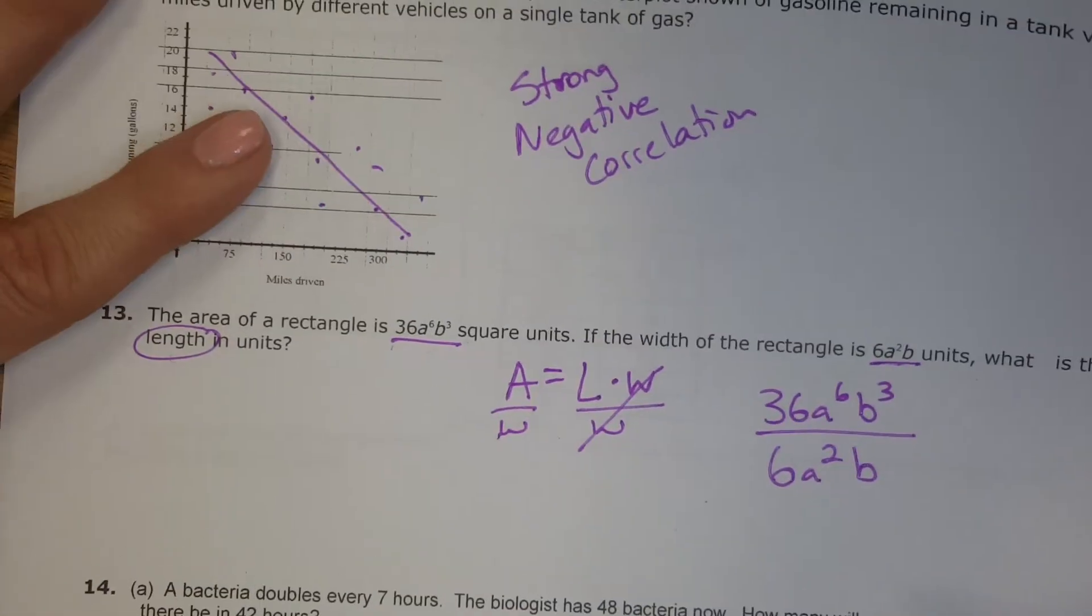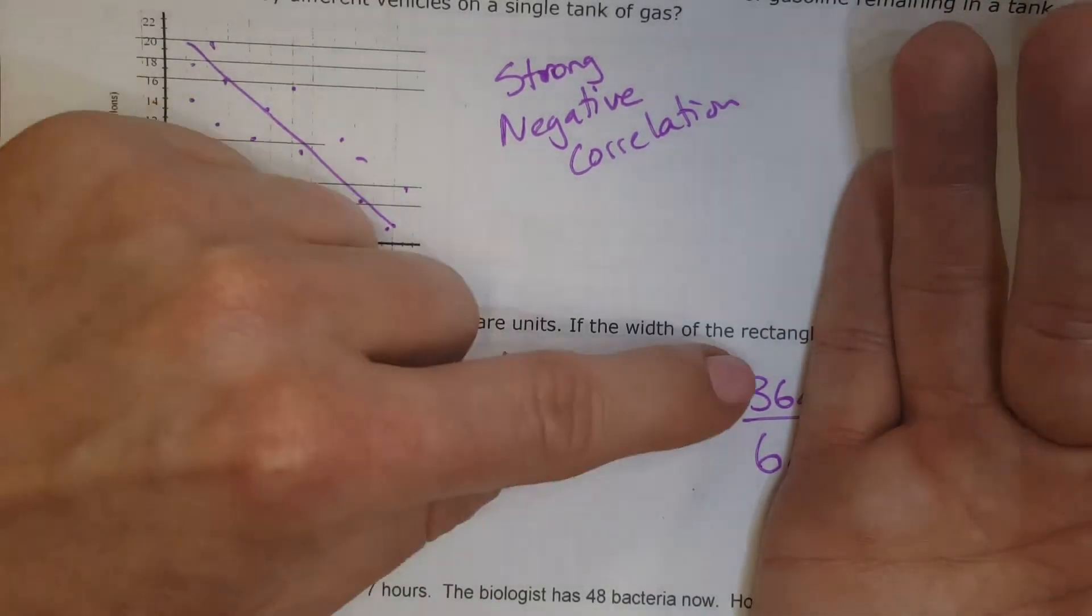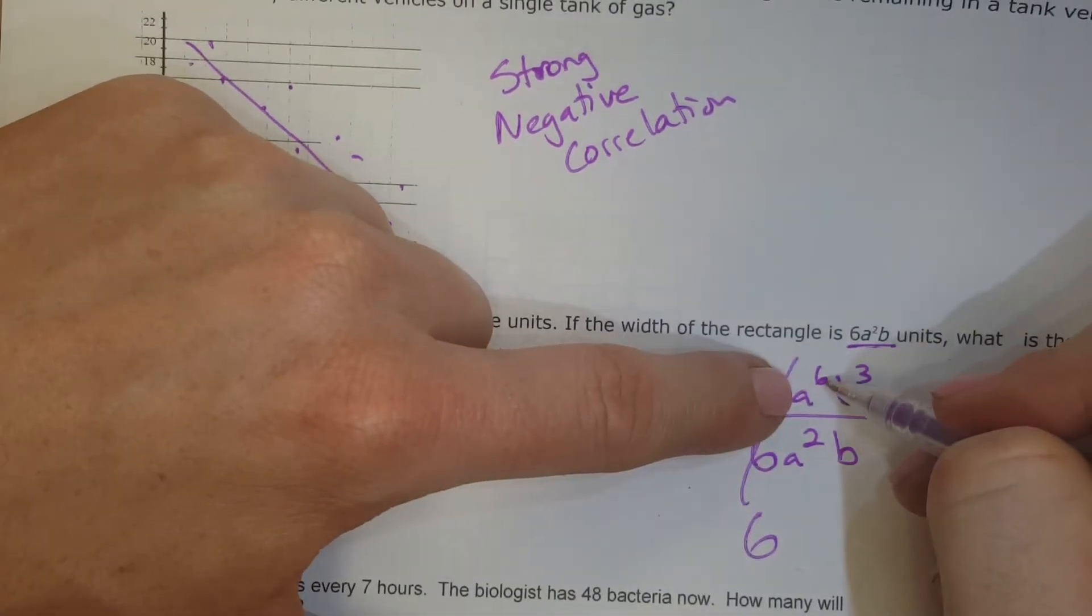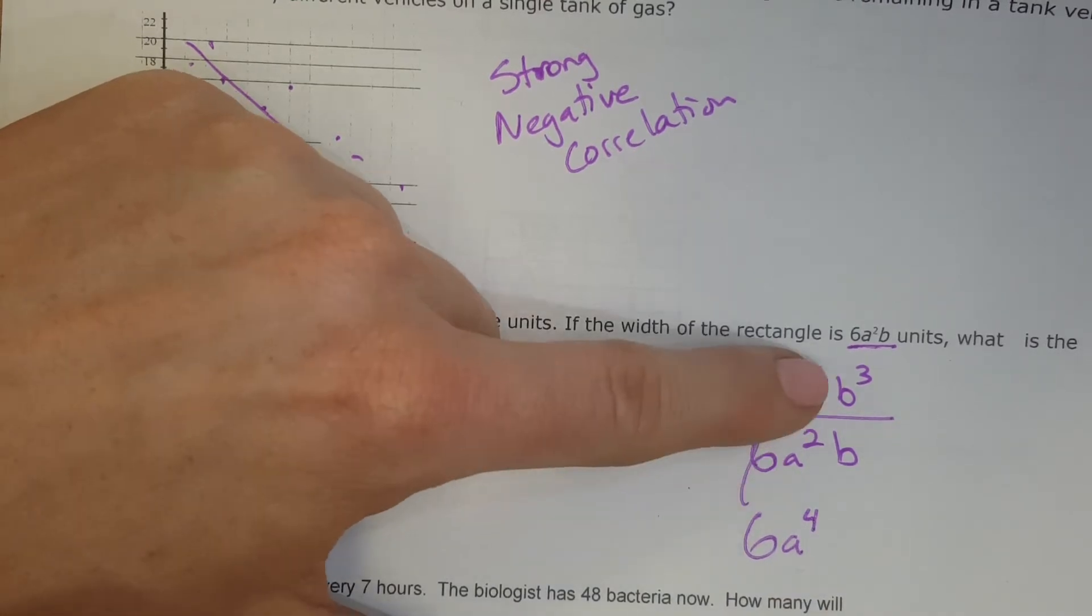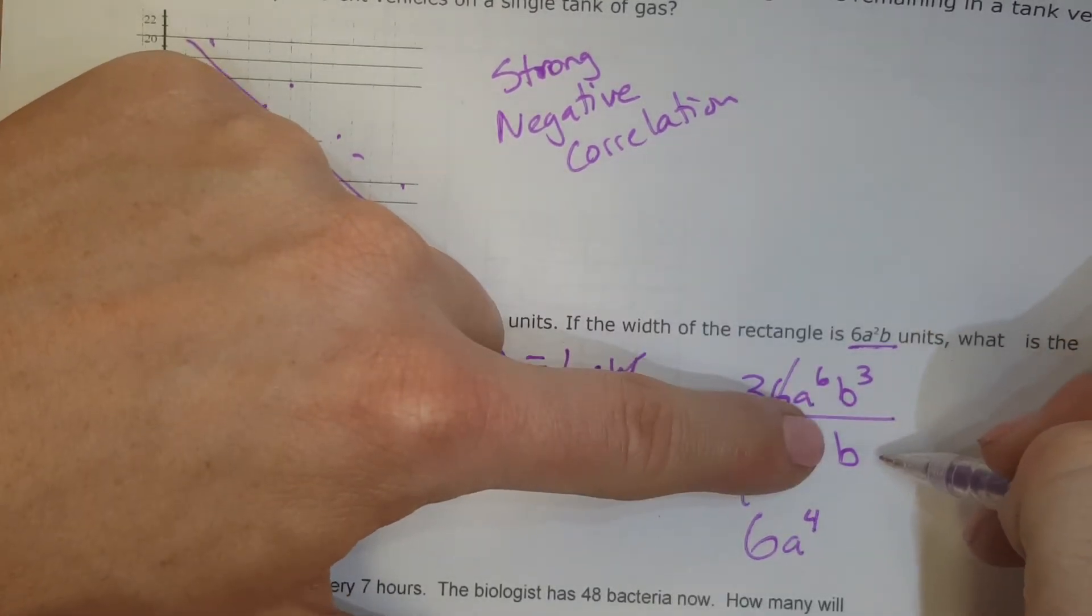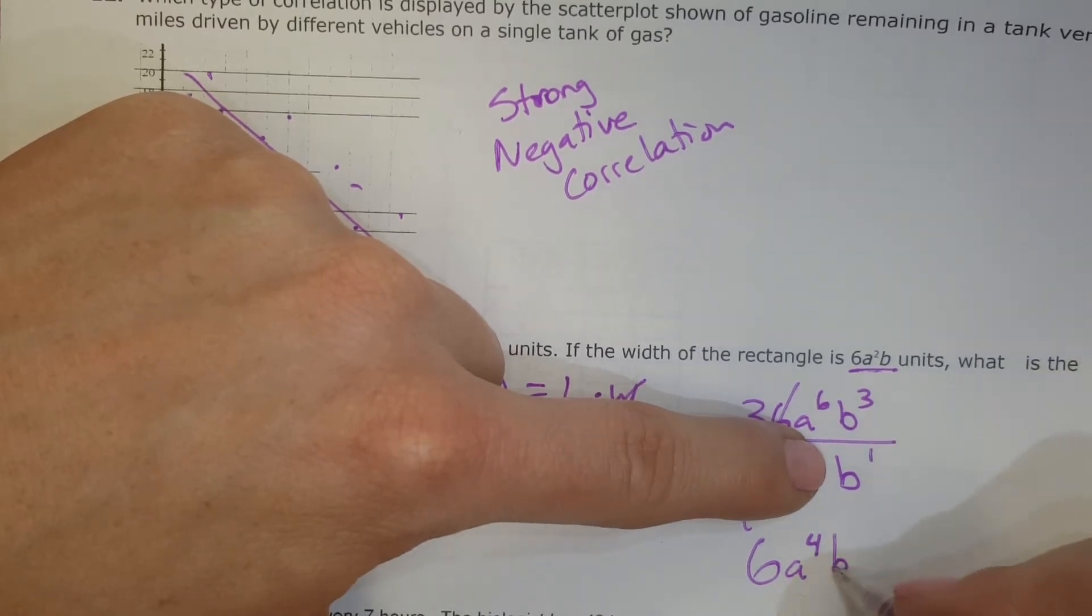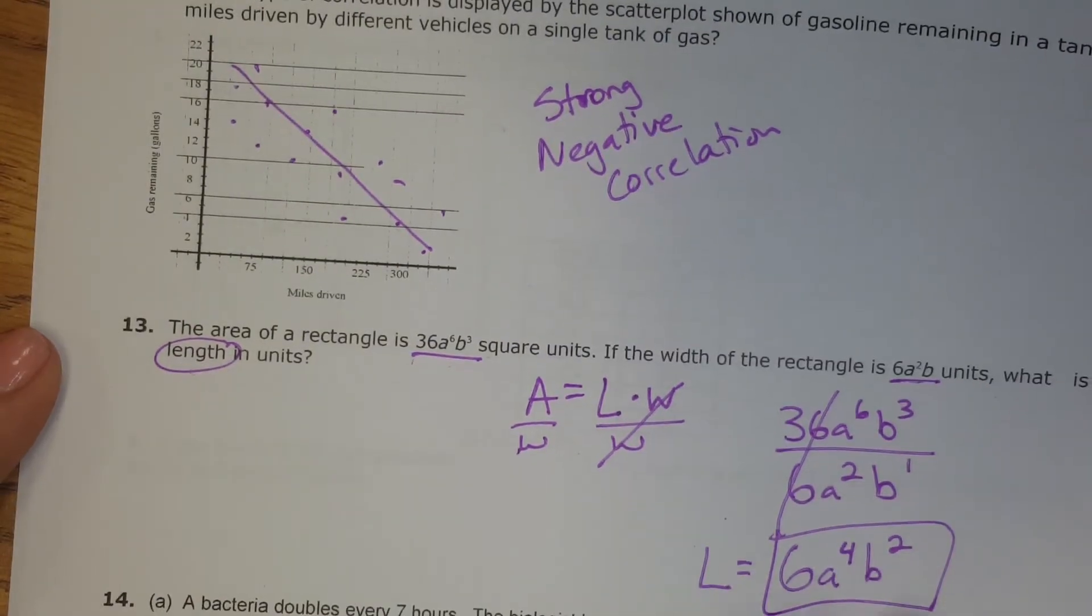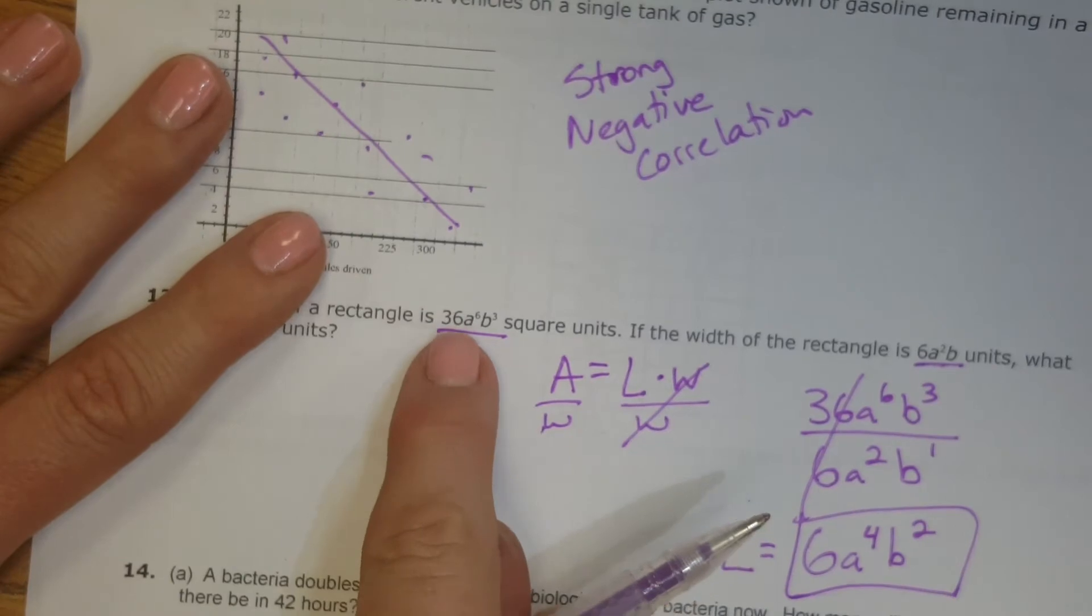So now I can solve that problem. Just like before, we're going to divide the integers, the whole numbers. Just regular divide. 36 divided by 6 is 6. Then we're going to subtract our exponents. 6 minus 2 is a to the 4th. And we're going to subtract these exponents. Don't forget that this b has an exponent of 1. So 3 minus 1 would be b to the 2nd power. So that's my length of my rectangle. And you can check that by multiplying this length times this width, and you should end up with this area.